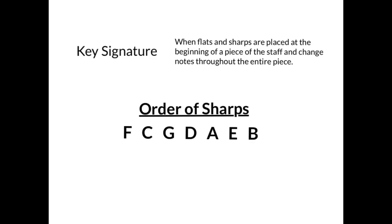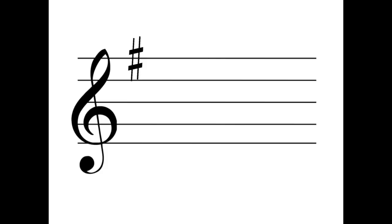Just like flats, there's an order of sharps if we're going to put the sharp in the key signature. The order of sharps is the exact opposite of the order of flats. We still have "bead" but it's backwards, and we still have GCF — greatest common factor — but now it's backwards. So if we have one sharp, that one sharp is always F sharp, and it'll be on the top of the staff.